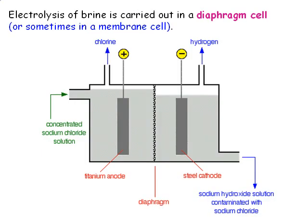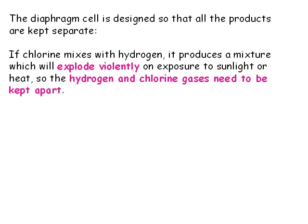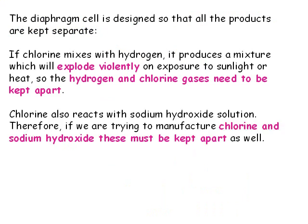In industry, a diaphragm cell or membrane cell is used to do the electrolysis. It is designed with a separator which keeps the three products separate. A mixture of chlorine and hydrogen gas would be potentially explosive, so these two products have to be kept apart. In addition, the chlorine can react with the sodium hydroxide solution if they are not kept apart — this is actually the basis for making bleach.